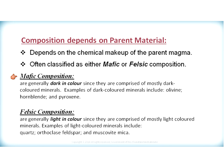Mafic compositions are generally dark in color, since they are comprised mostly of dark-colored minerals. Some examples of dark-colored minerals include olivine, hornblende, and pyroxene, and these minerals are the first to crystallize out of magma at very high temperatures. Felsic composition, in comparison, is generally light in color, since it is comprised mainly of light-colored minerals. Examples include quartz, orthoclase feldspar, and muscovite mica. These minerals generally crystallize out of magma at lower temperatures.